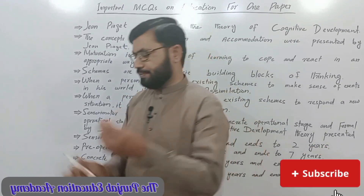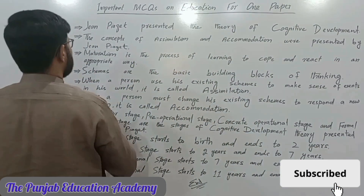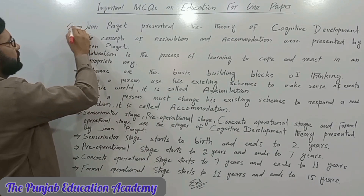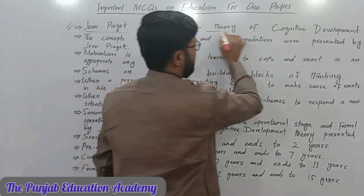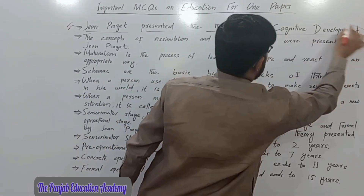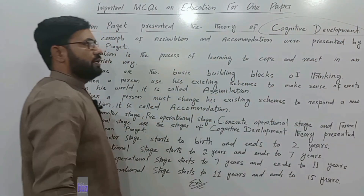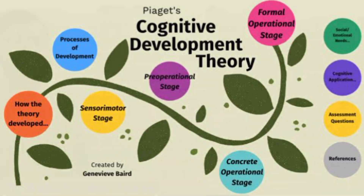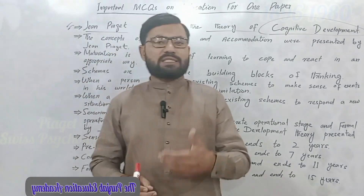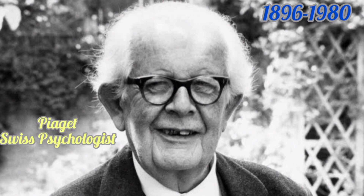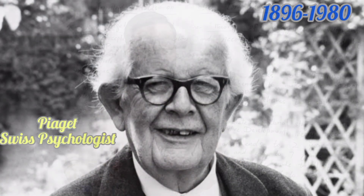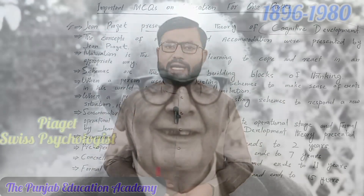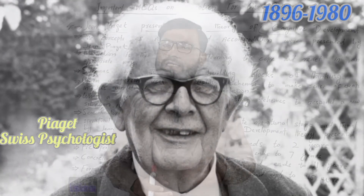Jean Piaget presented the theory of cognitive development. Jean Piaget was a famous Swiss biologist, philosopher, and psychologist who was born in 1896 and died in 1980.